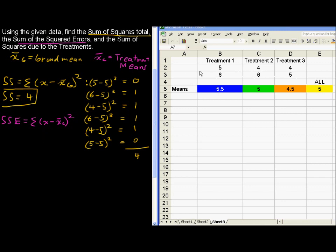I'm going to go with blue first. 5 minus 5.5 quantity squared, and 6 minus 5.5 quantity squared. Next group, next treatment, 4 minus 5 quantity squared. I'll do this in green. 4 minus 5 quantity squared, and 6 minus 5 quantity squared. Next one, I'll do an orange for the next treatment. 4 minus 4.5 quantity squared, and 5 minus 4.5 quantity squared.